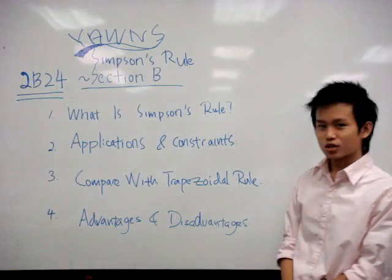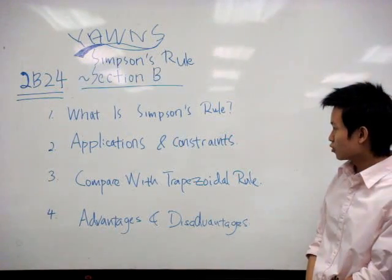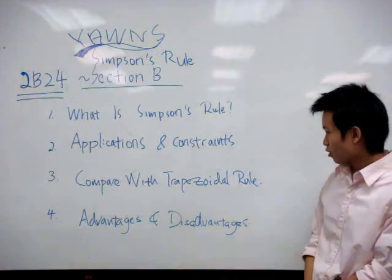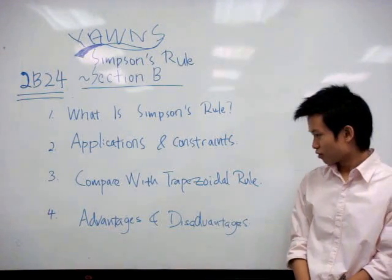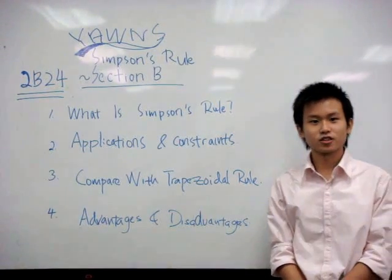Firstly, I'll cover what is Simpson's rule. Then I'll proceed on to its applications and constraints. Thirdly, I'll compare it with trapezoidal rule. Lastly, I'll talk about its advantages and disadvantages.